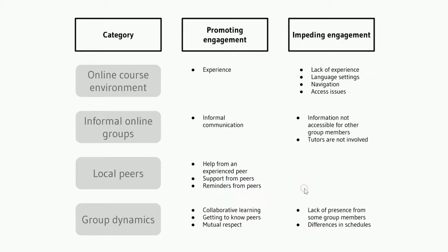Moving on to the results, you can see that we have identified four key categories to group the factors promoting and impeding student engagement. They are: the online course environment, informal online groups established by students, interactions with co-located peers, and online group dynamics. I'm going to say a few words about each of them in more detail.